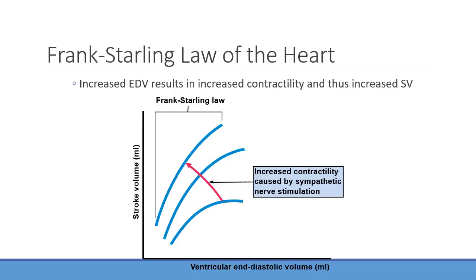Increasing contractility also increases the heart's workload and oxygen consumption. Patients who chronically have too much afterload and increased preload have ventricles working much harder than necessary. That's how CHF develops over time. If you stop delivering oxygen to the heart, that's myocardial ischemia — and if blood flow is impeded by plaques on top of this increased demand, that's how an MI develops.